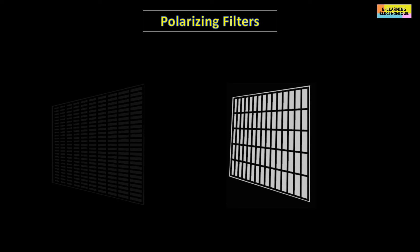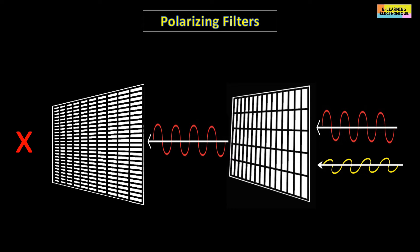If we now put in series two filters turned at 90 degrees, one vertical and the other horizontal, the light does not pass anymore. It is blocked.